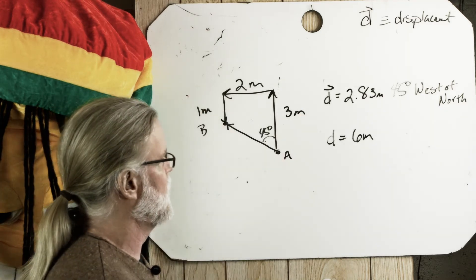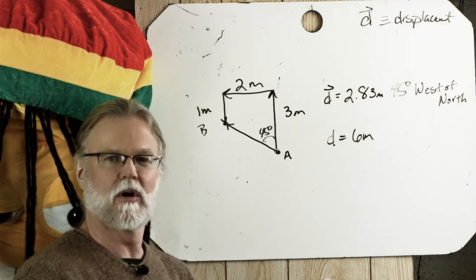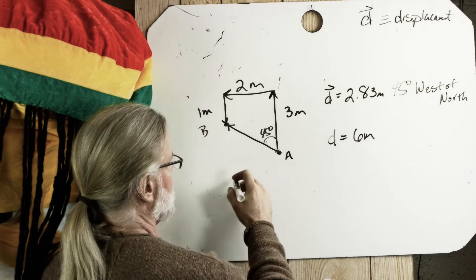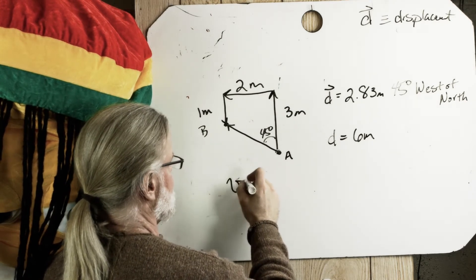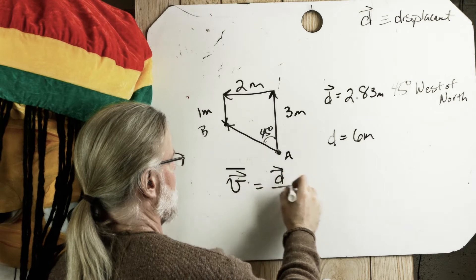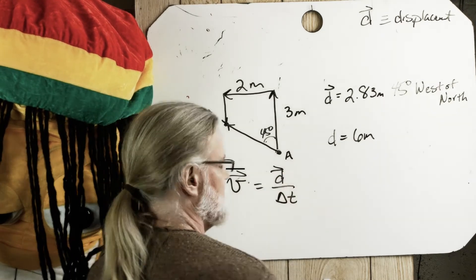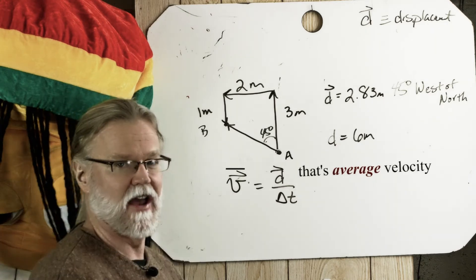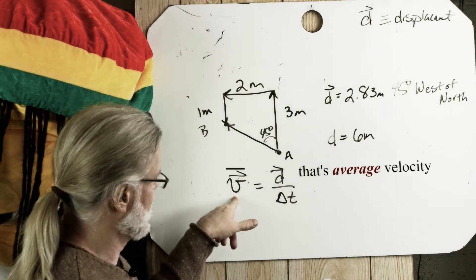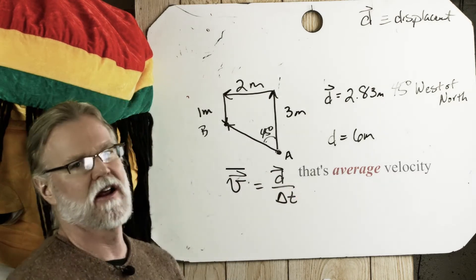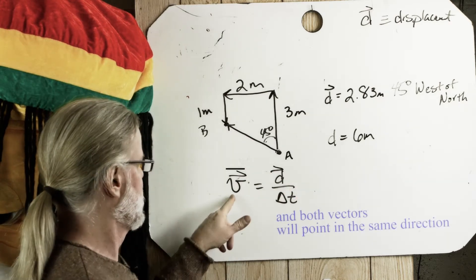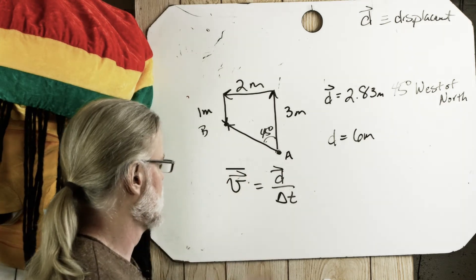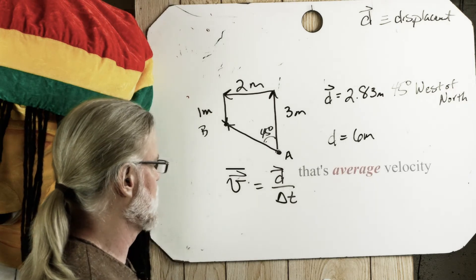Now, one of the most important reasons we define displacement is because we want to define a quantity called velocity. Velocity, of course, is defined as displacement divided by time, some time interval. And velocity is a vector. Whenever we have a vector on one side of an equation, we're going to have it on the other. We can't have just direction on one side of a mathematical relationship. They're on both sides. So velocity equals displacement divided by time.